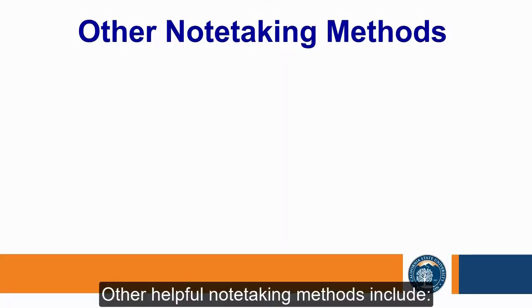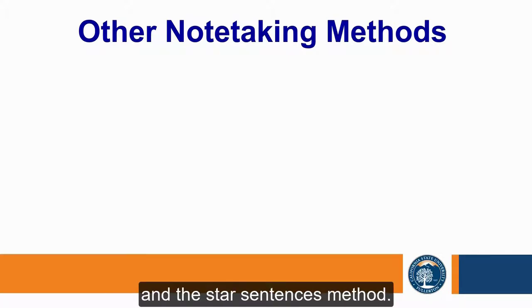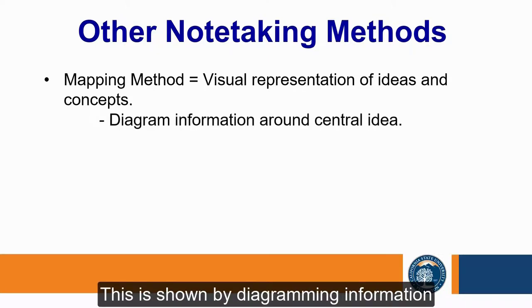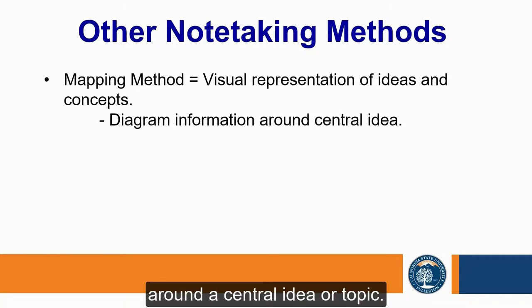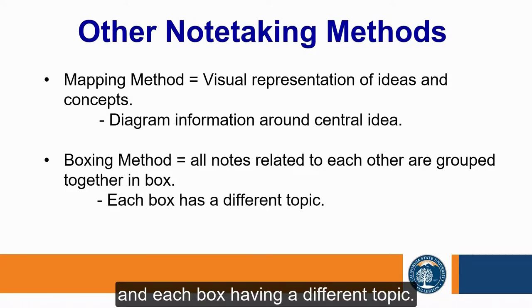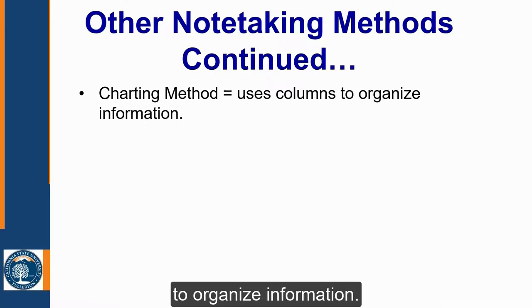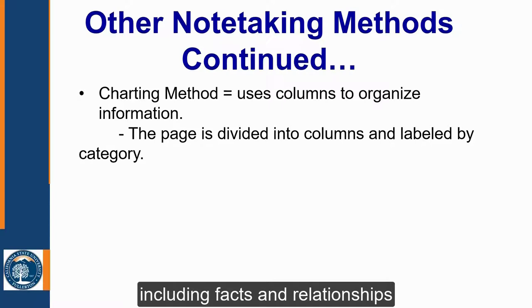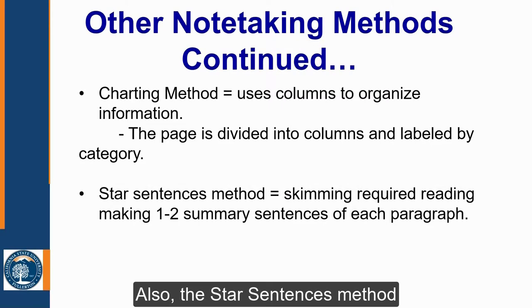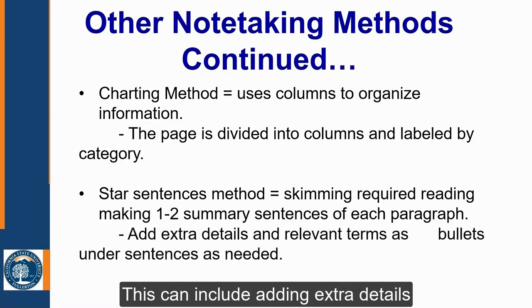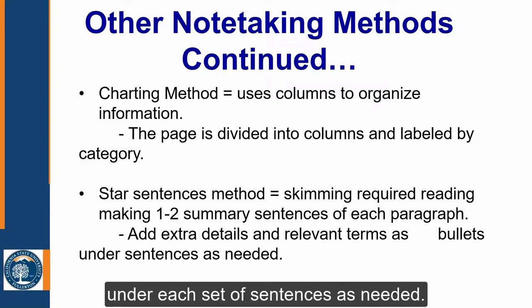Other helpful note-taking methods include mapping, boxing, charting, and the star sentences method. The mapping method is a visual representation of concepts and ideas, shown by diagramming information around a central idea or topic. The boxing method is grouping together all notes related to each other into a box, with each box having a different topic. The charting method uses columns to organize information — the page is divided into columns and labeled by category, useful for lectures including facts and relationships between topics. The star sentences method involves skimming the required reading and writing one to two sentences to summarize each paragraph, with extra details and relevant terms as bullet points as needed.